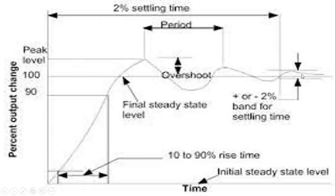The settling band is defined as plus or minus 2% of the final value, and the total time to settle within this band is called the 2% settling time — meaning the time required for the instrument output to settle down to the given input value, in this case 100°C (100% output change).